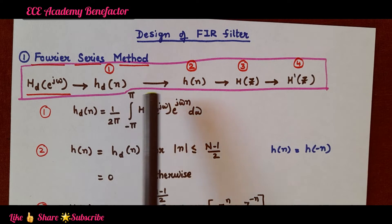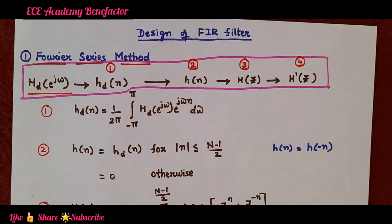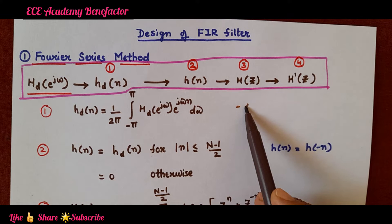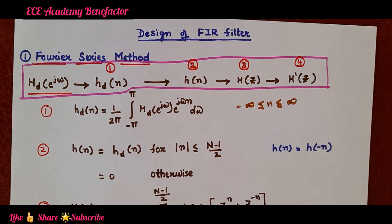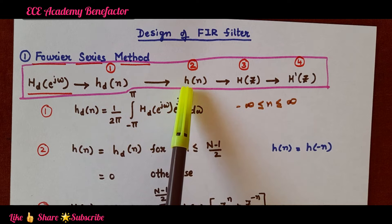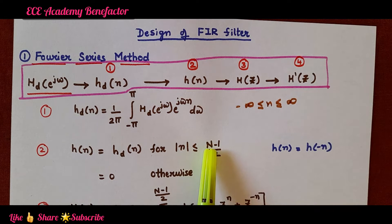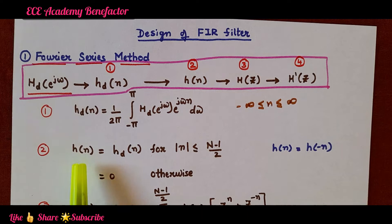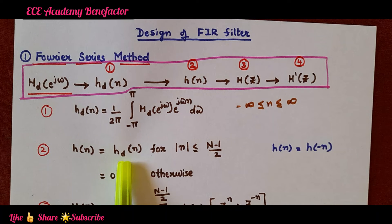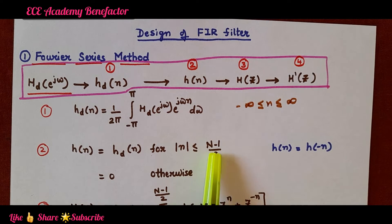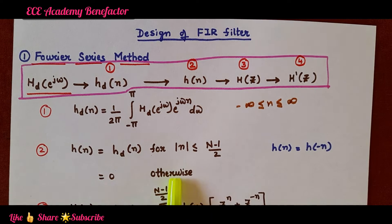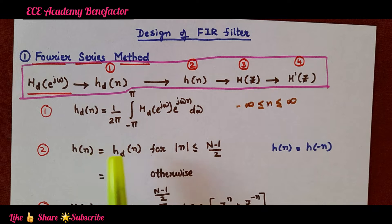After computing h_d(n), we have to find h(n). Here n is varying between minus infinity to infinity, and since we are designing an FIR filter which is of finite nature, we truncate the desired impulse response. h(n), the truncated impulse response, is equal to h_d(n) for |n| ≤ (N−1)/2, and is 0 otherwise.